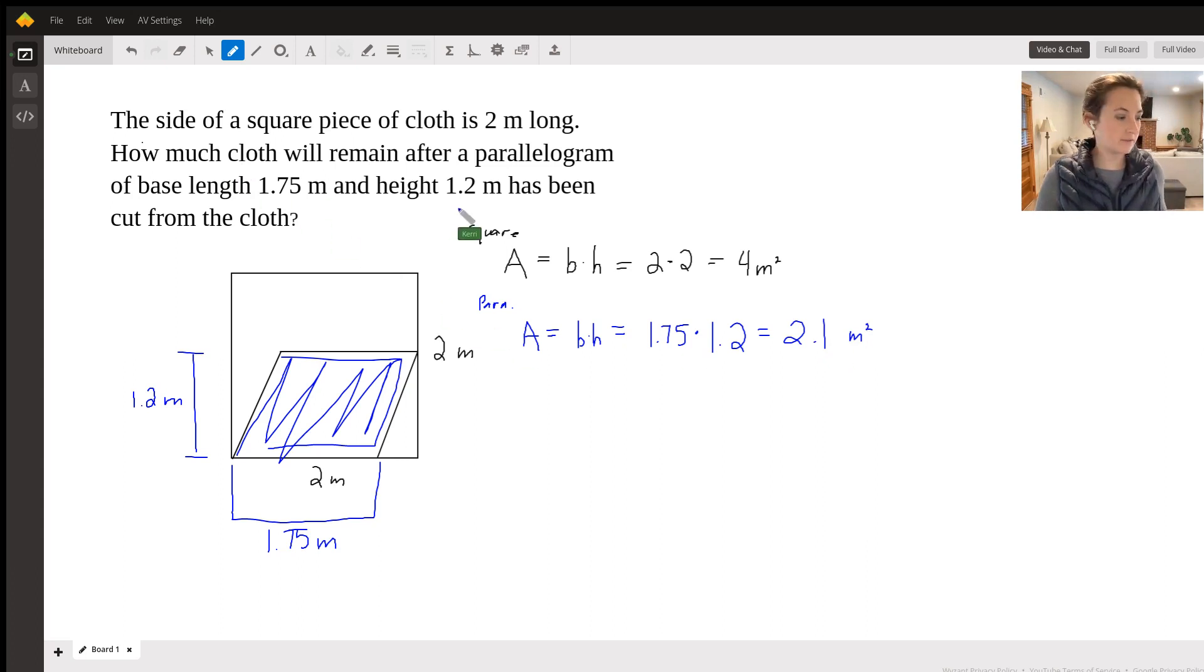And so basically here, all we have left to do is to subtract those two values because we're trying to figure out how much is left after we would take out that piece. So from there, we would do subtraction of the square, which is 4,